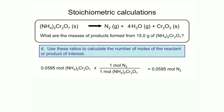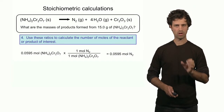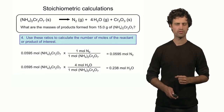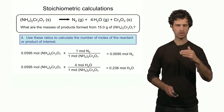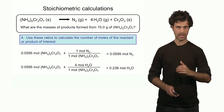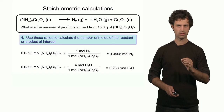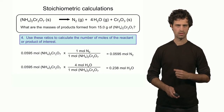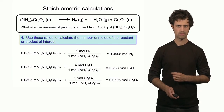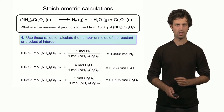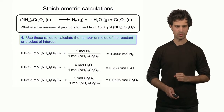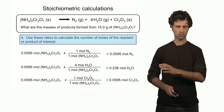I take 0.0595 moles of the reactant and convert that into moles of nitrogen molecules by multiplying by the mole ratio, where the number of moles of nitrogen appears on top and the number of moles of reactant at the bottom. I find 0.0595 moles of nitrogen molecules. Performing the same step for water using the ratio of 4 to 1, I find 0.238 moles of water molecules. And for chromium oxide, 0.0595 moles of reactant times the mole ratio gives 0.0595 moles of chromium oxide.